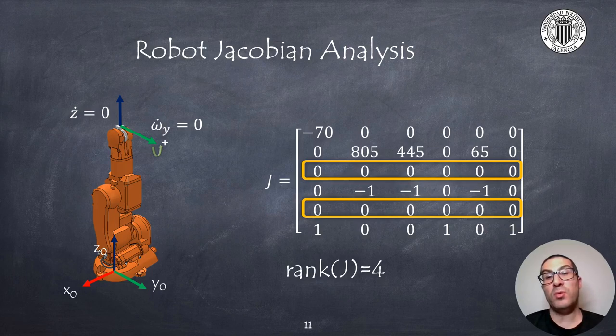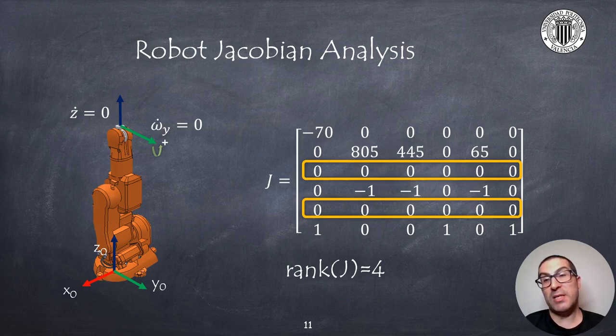Indeed if we compute the rank of the Jacobian matrix we get that the rank for this Jacobian matrix is 4 and therefore is rank deficient because the maximum expected rank would be obviously 6.